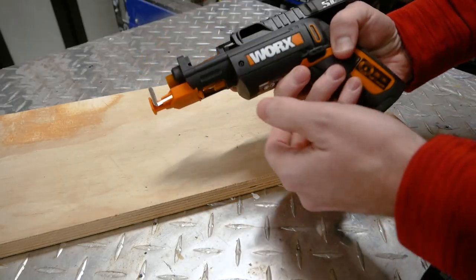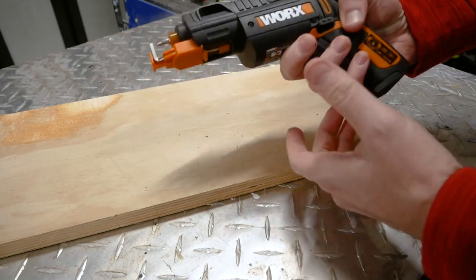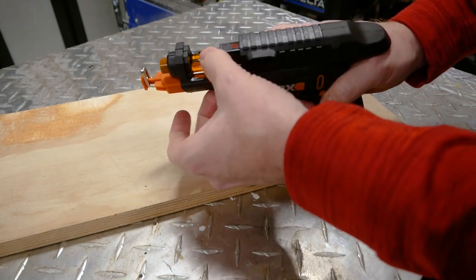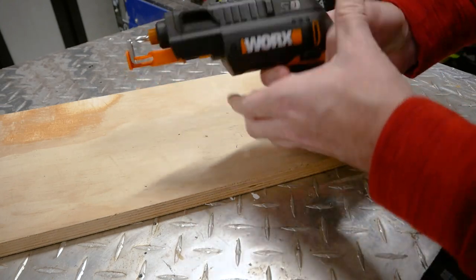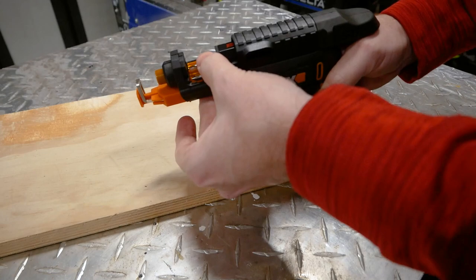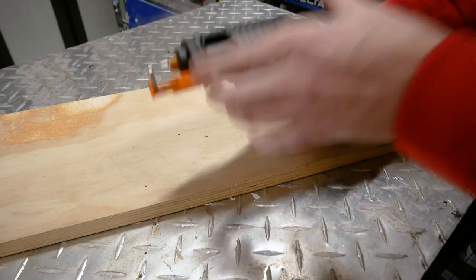It's semi-automatic and does come with a six-round magazine. Basically to change bits, pull back the slide, rotate, slide forward. Now we've got a Phillips bit on there. Now we've got a square bit on there.